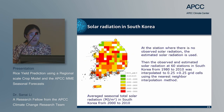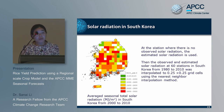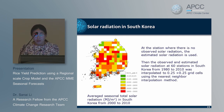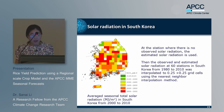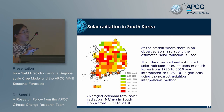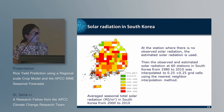Observed and estimated solar radiation at six stations in South Korea from 1980 to 2010 were interpolated to 0.25 by 0.25 degree scale using the nearest neighbor interpolation method. This figure shows the average total solar radiation during the rice growing season, ranging from approximately 2,000 to 3,000 MJ per meter square.